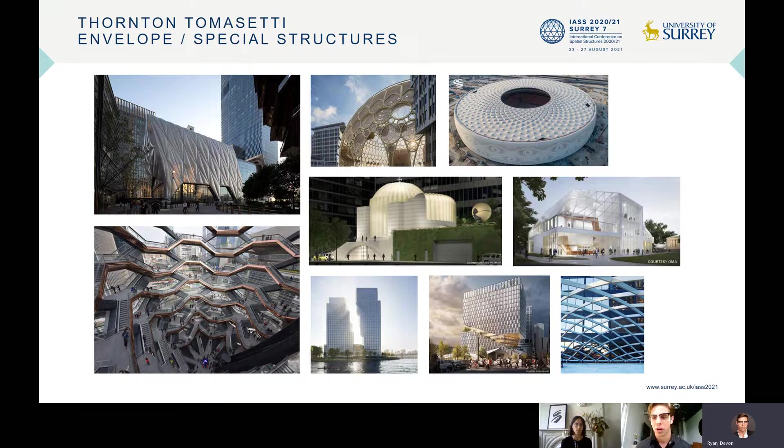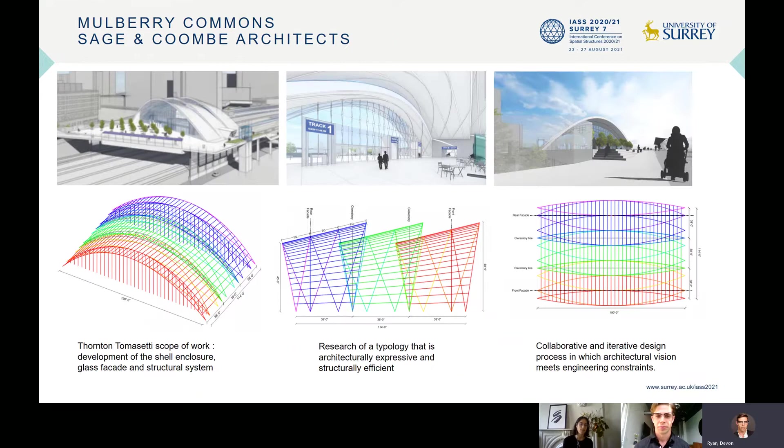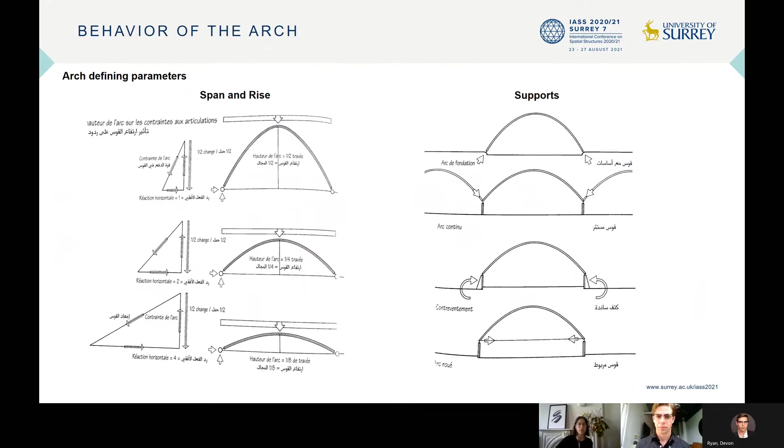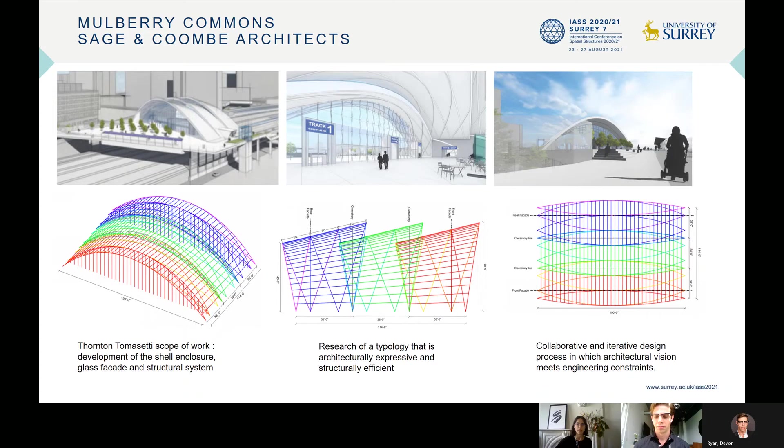So I'm going to hand this to Amandine to go over the project specifics. Hi. Yes, so this case study is based on the design of a Mulberry Commons project at Newark Penn Station in New Jersey. Sage and Combs are the architects, and we, Thornton Tomasetti, developed the shell and glass facade structural system.